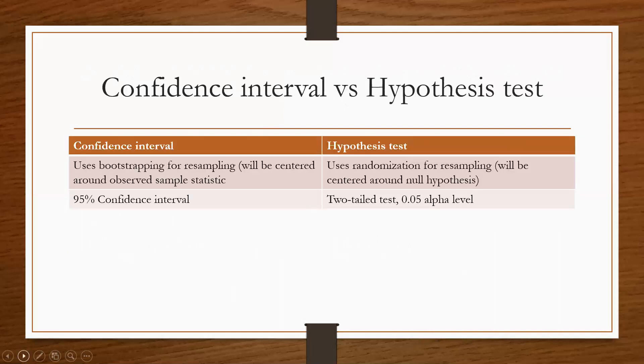Confidence interval versus hypothesis test. I tried to just, the book was not really clear. Yeah, power, you know, beta is... I'm trying to think of the easiest way to put it. Alright, I'm just going to come back to that at the end, I don't want to hold much longer. Alright, so confidence interval versus hypothesis test. I just tried to break it down as simply as I could. For a confidence interval, you're going to be using bootstrapping for your resampling, and so the graph that you get is going to be centered around the observed sample statistic.